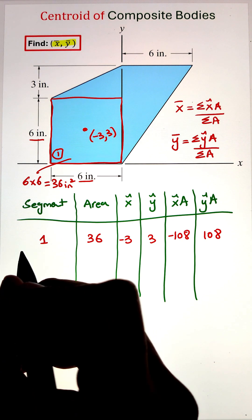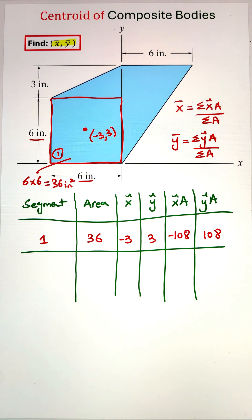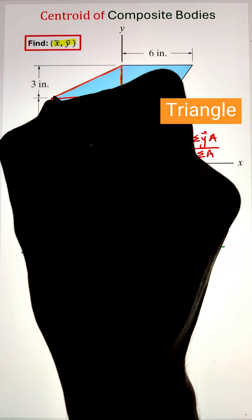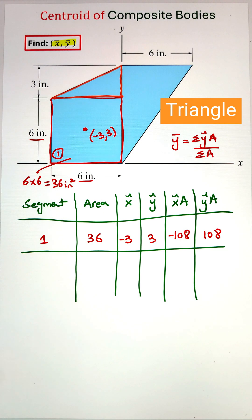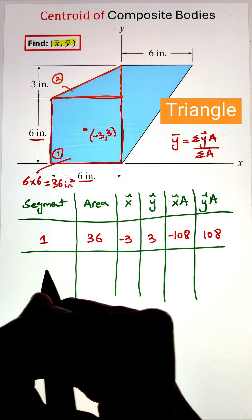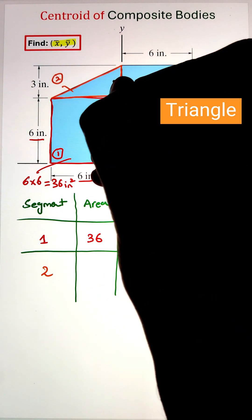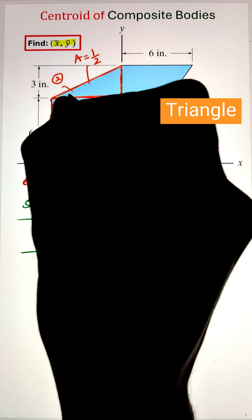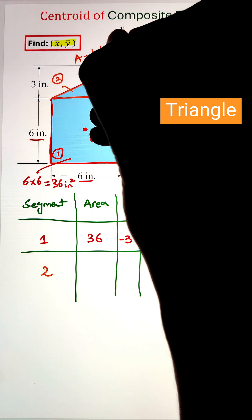After that, we can move to our right angle triangle that is above the square. The area can be calculated using the formula for the area of a triangle: half times base times height of that right angle triangle. Here the base value is 6 inches and the height is 3 inches, so our area is 9 square inches.